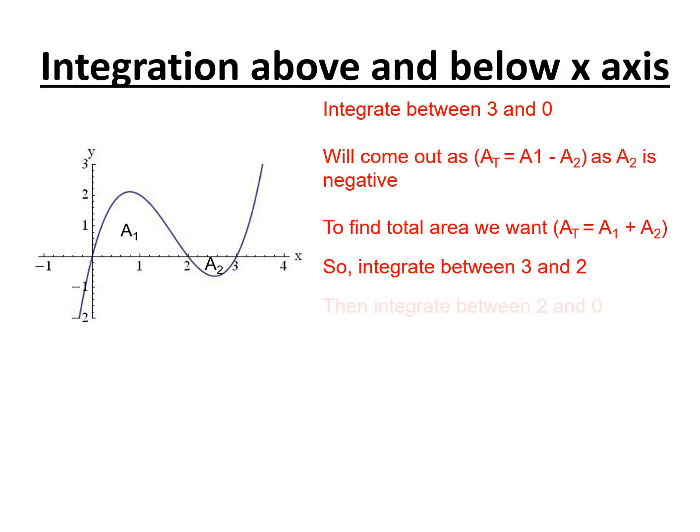So we integrate between three and two first, then integrate between two and zero and we make a2 positive. It's going to get a negative value so we make it positive instead and then add the two together.